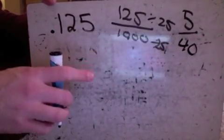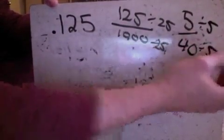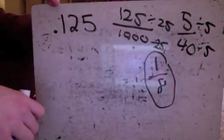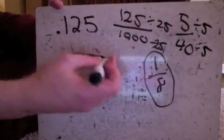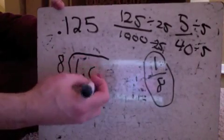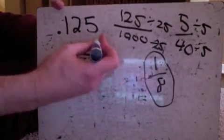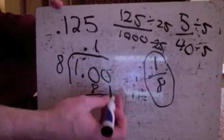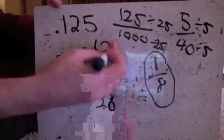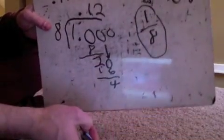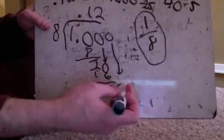I can reduce 5/40 further by dividing both by five. Five divided by five is one, and forty divided by five is eight, so the final answer is one-eighth. To check, I divide one by eight. Eight goes on the outside. Eight goes into ten once — subtract eight, remainder two. Bring down a zero: eight goes into twenty twice, sixteen, remainder four. Bring down another zero: eight goes into forty five times with nothing left over. That gives 0.125.